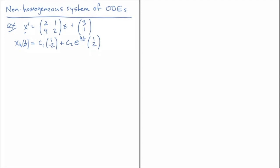The vector (3, 1) in the inhomogeneous term will have a component in the direction (1, -2) and a component in the direction (1, 2). Because it has a component in the direction (1, -2), we're going to run into trouble if we just try to use x_p equal to a constant vector v. This is similar to what happened with second order equations when the inhomogeneity was a solution to the homogeneous equation — the inhomogeneity has a component parallel to the homogeneous solution without the exponential term.